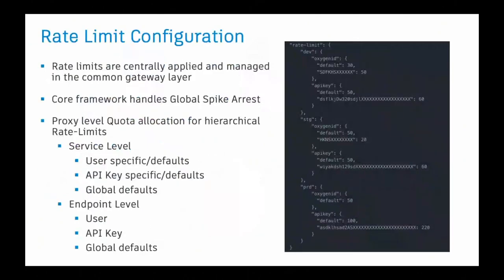We have different levels of controlling the traffic. The first level is a global spike arrest — that is the cap on your system. When your back-end system is able to serve only 10,000 requests per second, for example, you put that cap on this global spike arrest and then any request beyond that is rejected. It acts based on what you have configured, and it's helping your traffic to be degraded gracefully. You don't throw 500s and go down for a couple of hours — you can degrade the experience of the customer and then recover pretty soon if you have pre-designed the system that way.